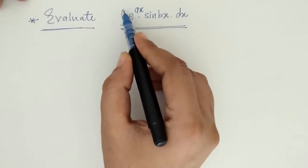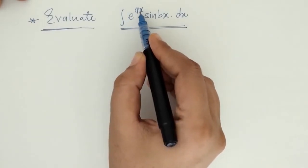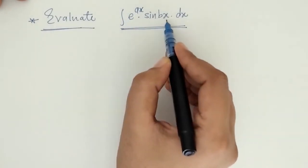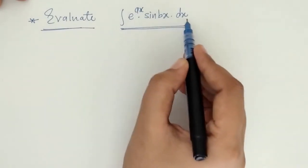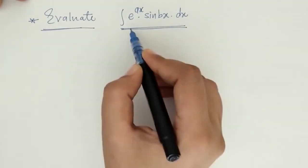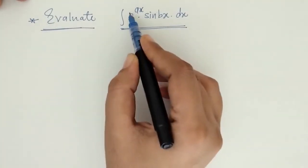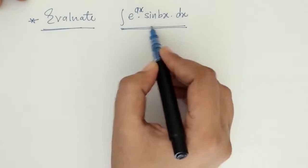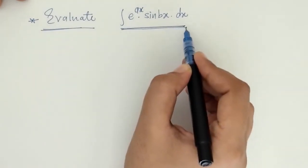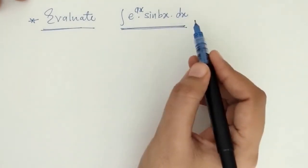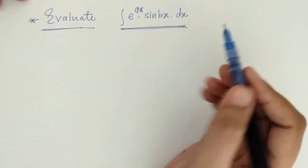Here we have the integration of e raised to ax into sine of bx, where a and b are constants. We have to evaluate the integration of a product of two functions, which means we have to apply integration by parts.